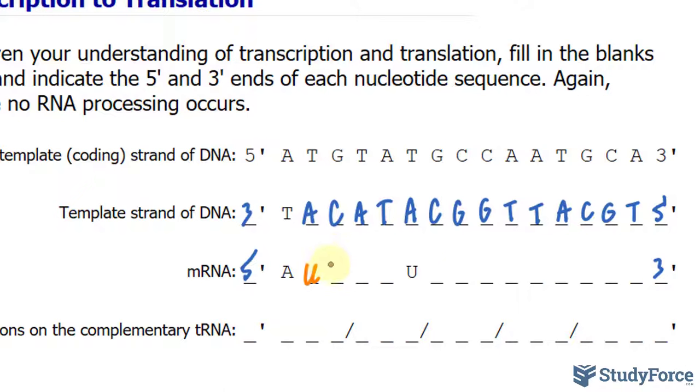So C and G base pair, A base pairs again with U. T and A, this one is given, A and U, and the rest should look like this: G, C, C, A, A, U, G, C, A.